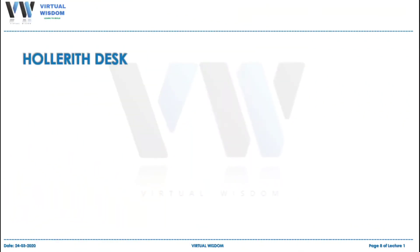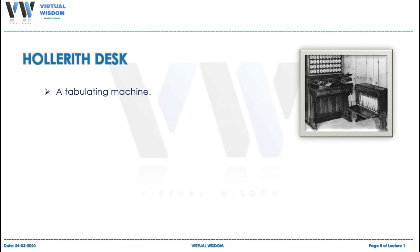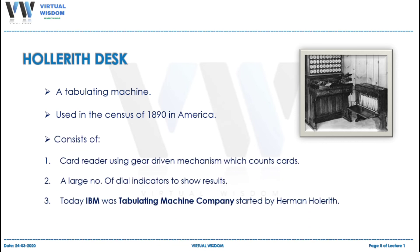A tabulating machine called Hollerith Desk was invented after the engines idea. It was actually not built on the concept of engines, but had a contribution in the evolution of computer. The device was named after its inventor Hermann Hollerith in 1890. It consisted of card readers which sensed the holes in the cards, a gear-driven mechanism which counted the cards, and a large set of indicators displaying the results. It was made for the census of 1890 in America.